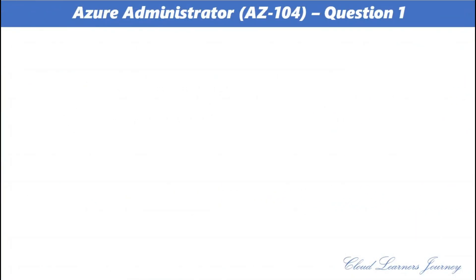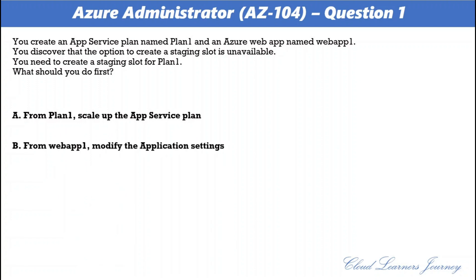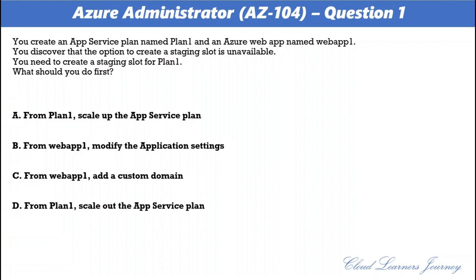Question number one. You create an app service plan named plan1 and an Azure web app named webapp1. You discover that the option to create a staging slot is unavailable. You need to create a staging slot for plan1. What should you do? The options are: A) from plan1 scale up the app service plan, B) from webapp1 modify the application settings, C) from webapp1 add a custom domain, D) from plan1 scale out the app service plan. The correct option is A: from plan1 scale up the app service plan.